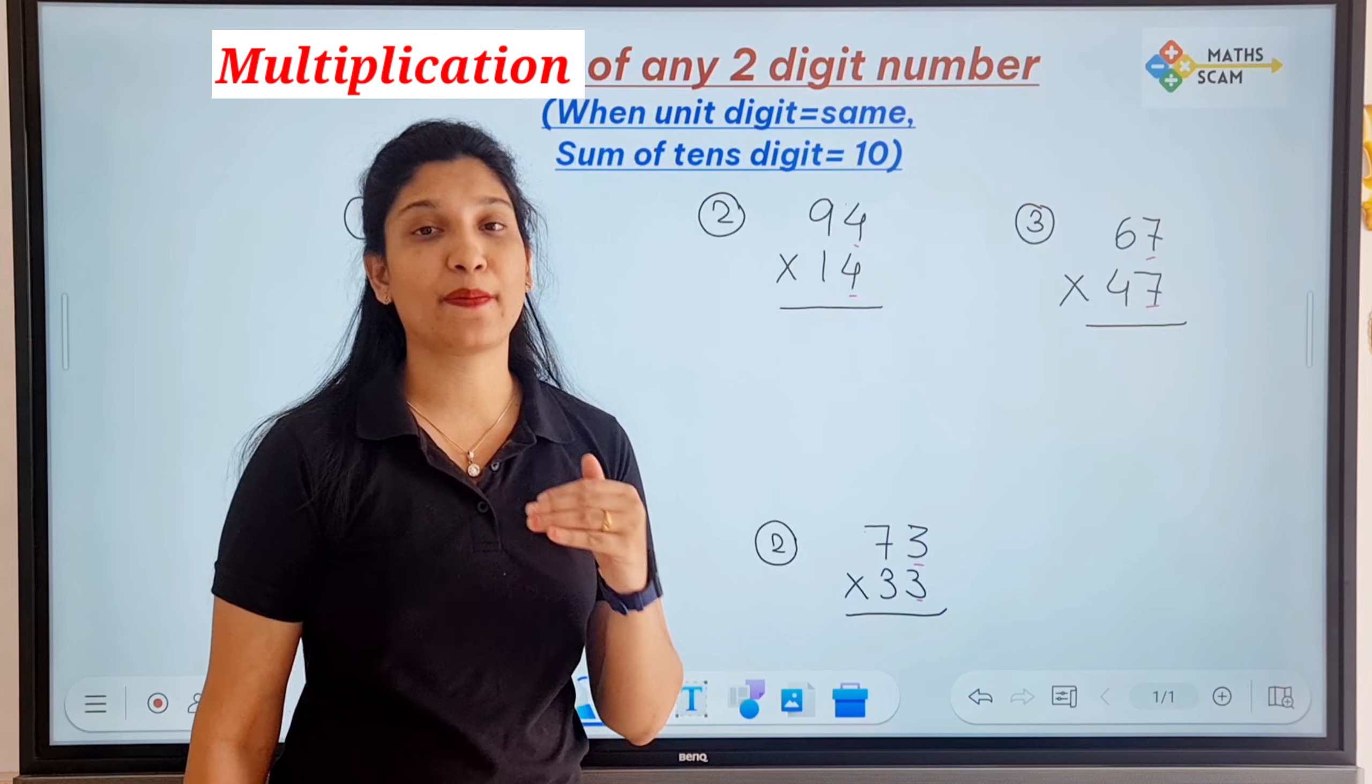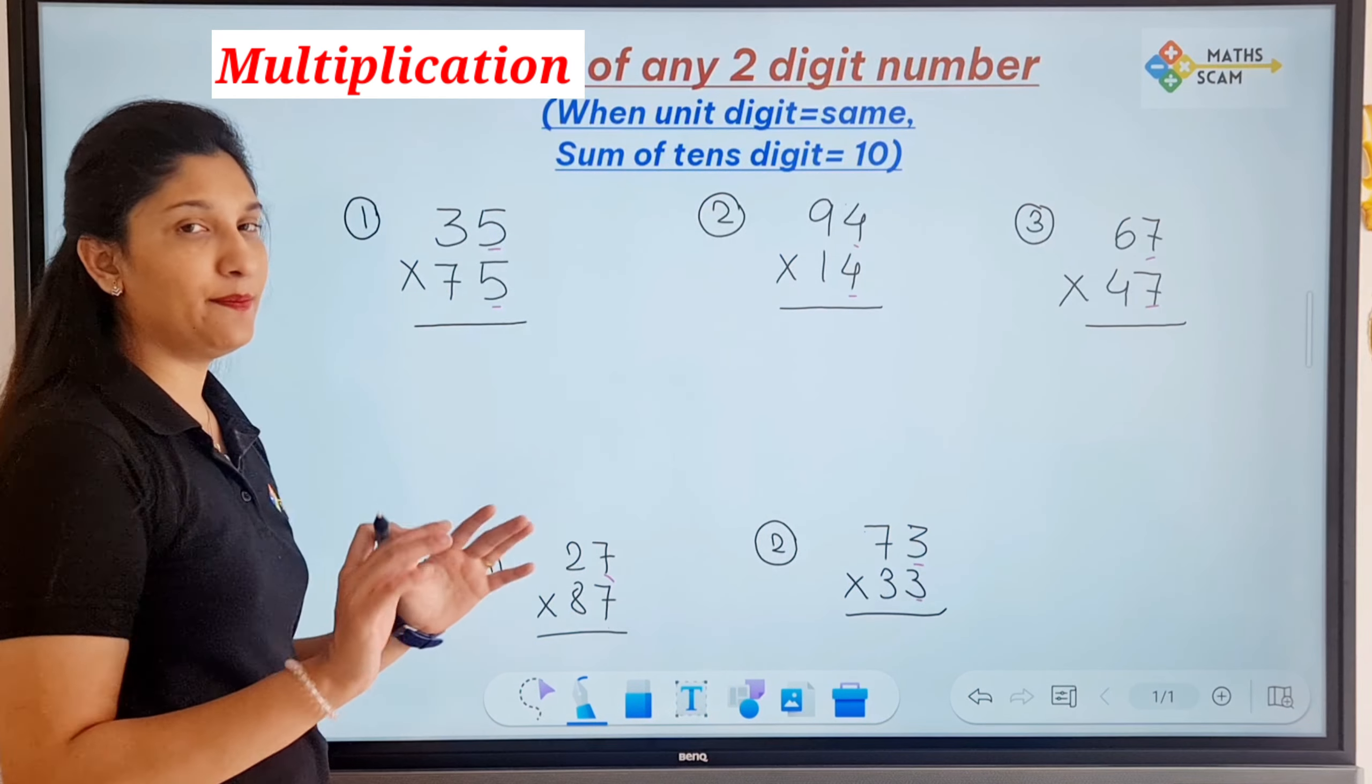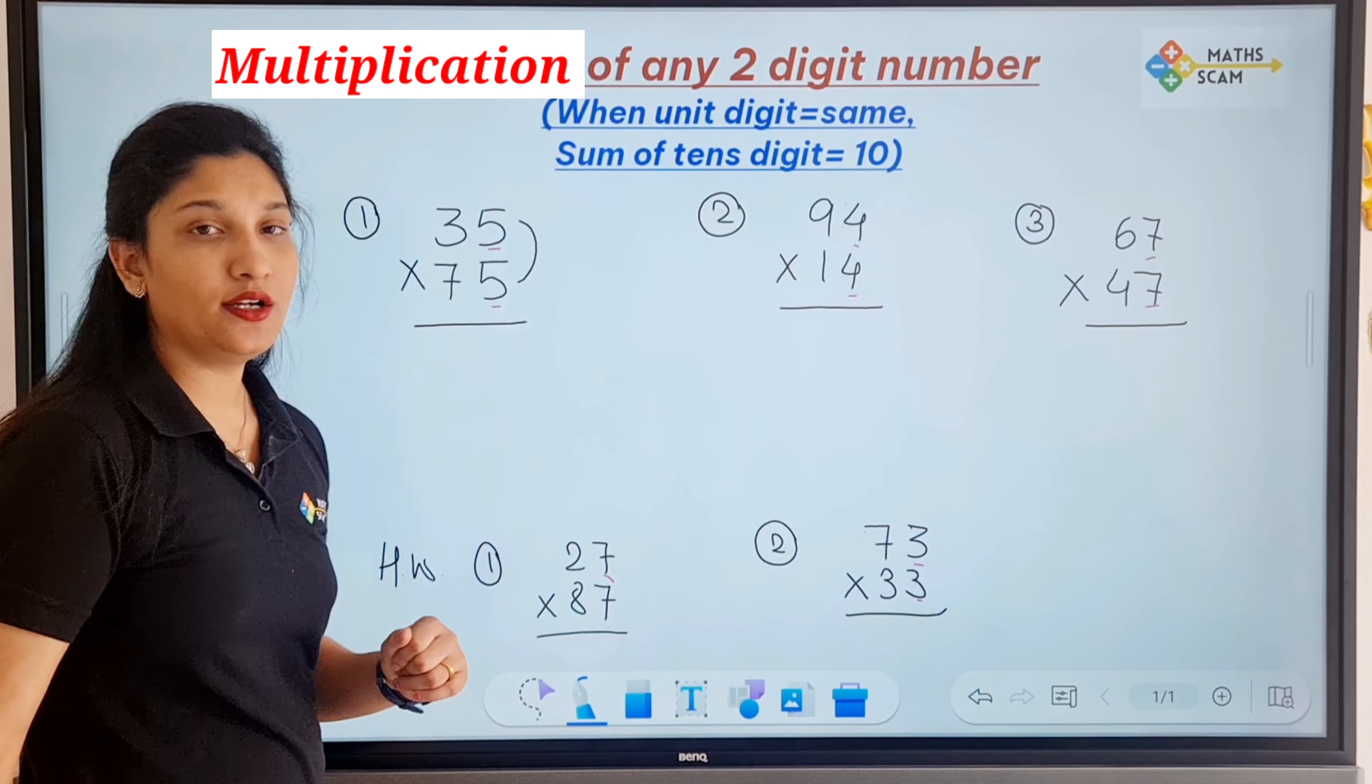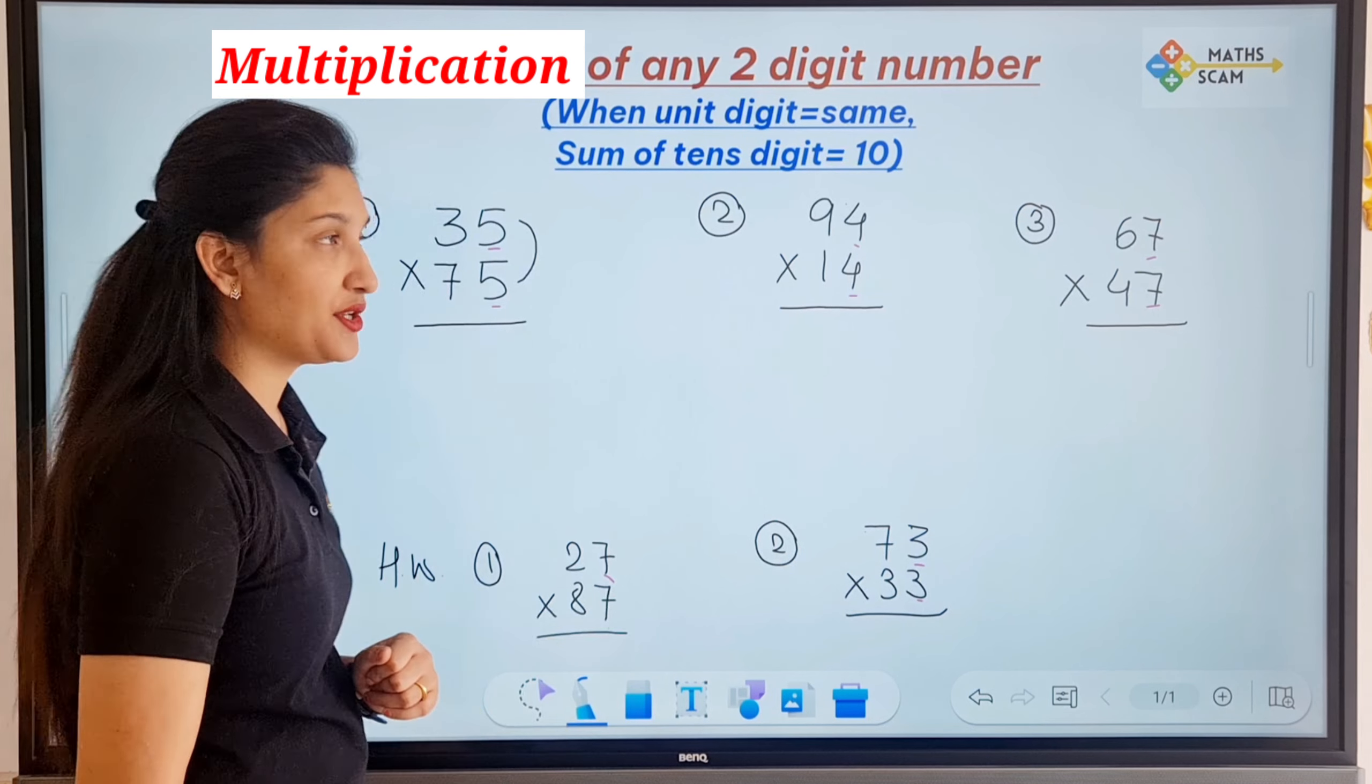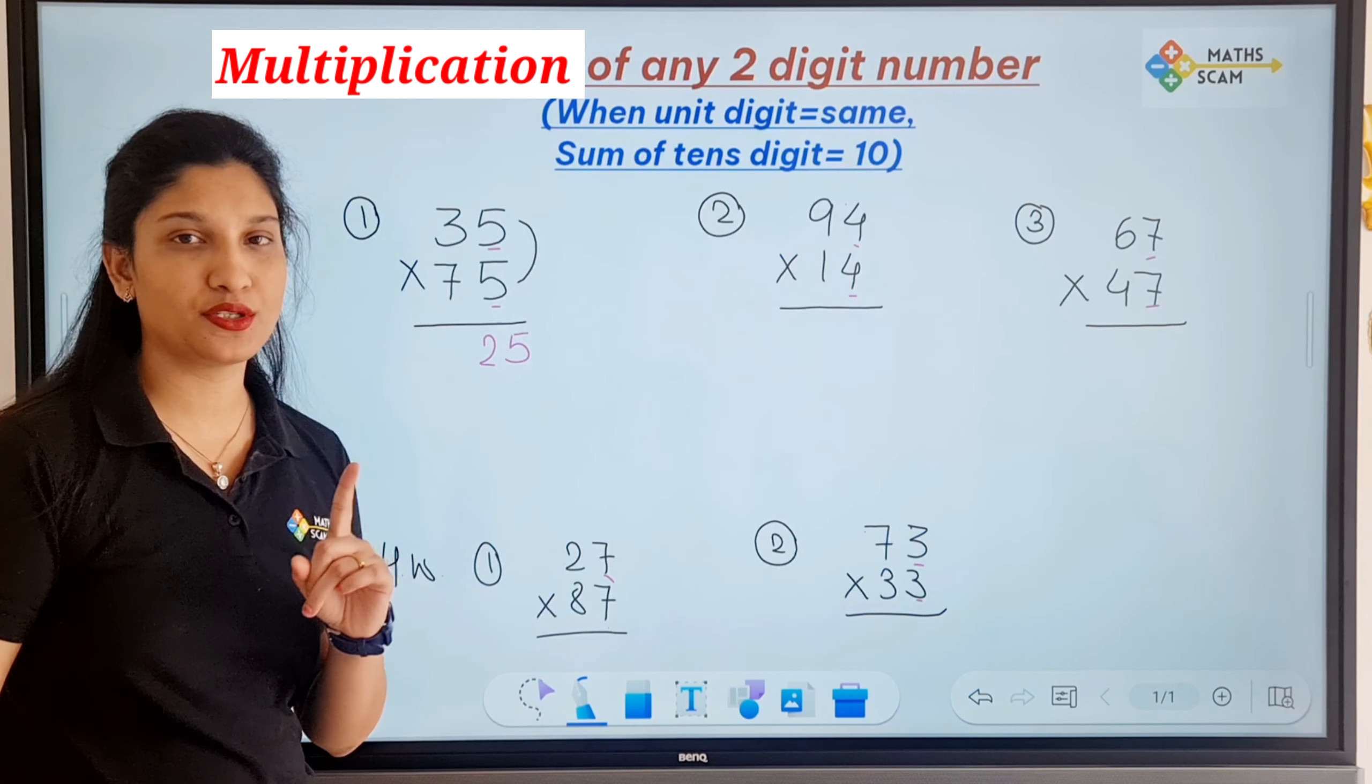So if you have this question, if you have this in the exam, then how can you solve it? Simple step is: you just have to multiply the unit digits. So unit digit multiplication is 5 times 5, which is 25, okay?